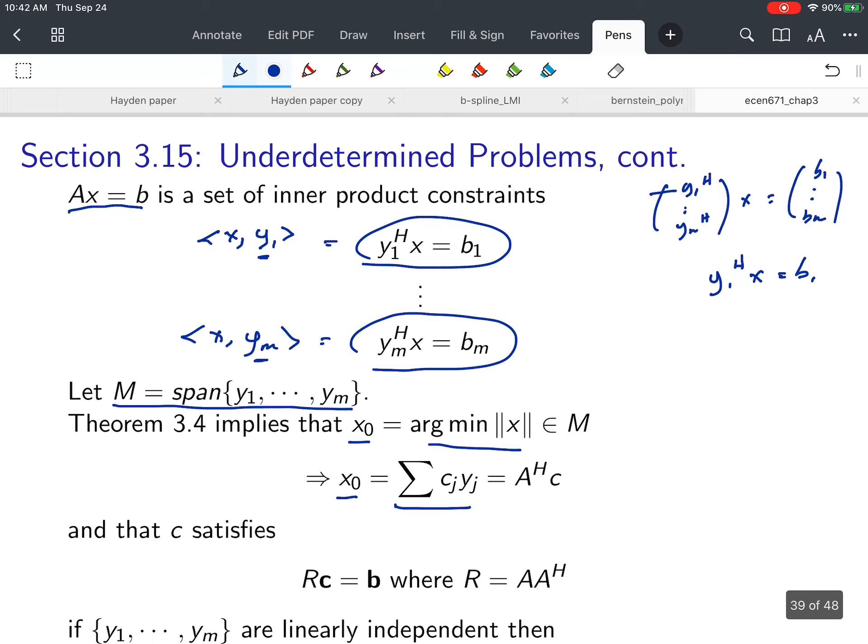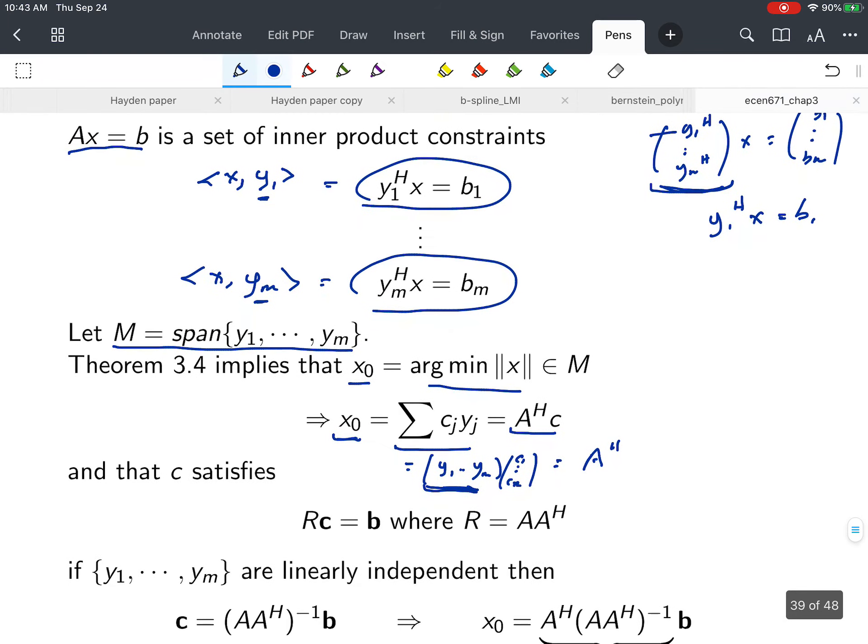In other words, x₀ is a linear combination of all the y's: x₀ equals [y₁, ..., y_m] times [c₁, ..., c_m]^T. This equals A^H c, because A has rows y_i^H, so A^H is [y₁, ..., y_m]. Theorem 3.4 says that x₀ equals A^H c, where c satisfies Rc equals b and R is the Grammian.